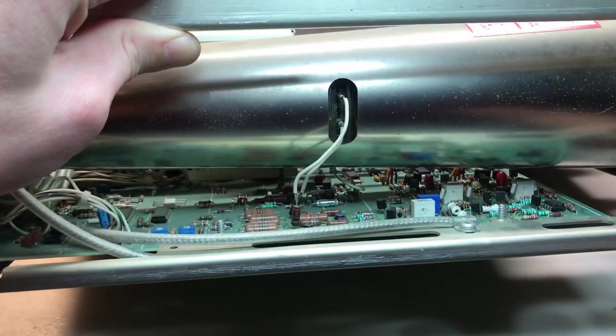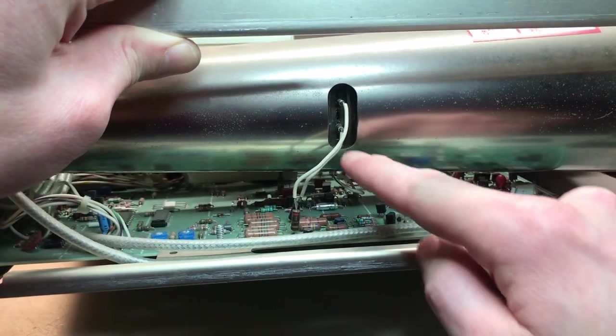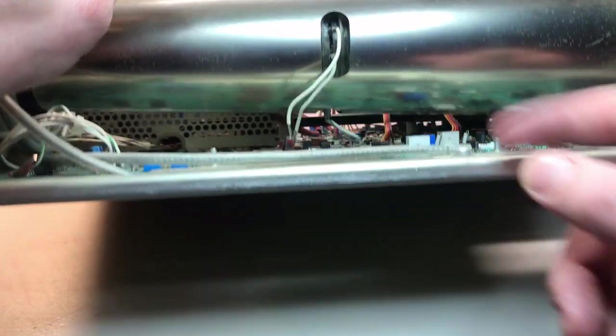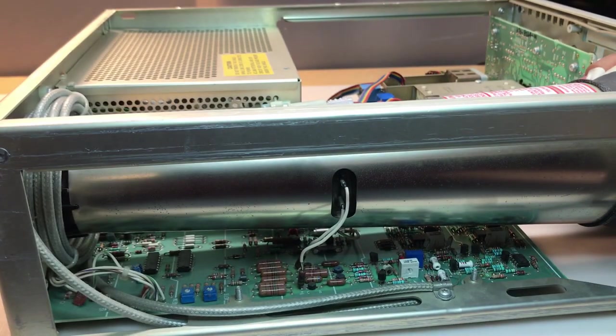And then the horizontal are down here. I'm definitely going to want to label these so that I know where they go when I put them back. Maybe T for top and B for bottom or something like that. Same with the bottom, the horizontal deflection wire. So make sure to do that.